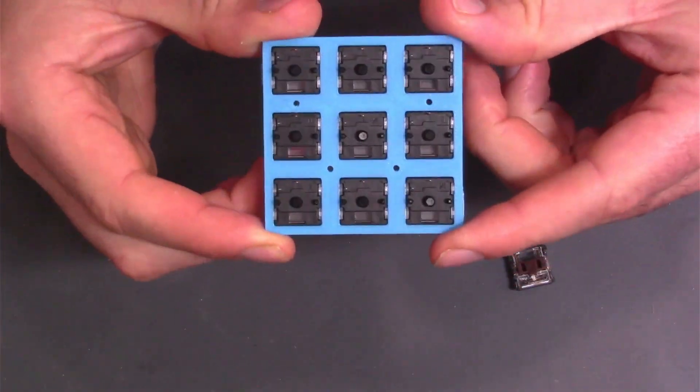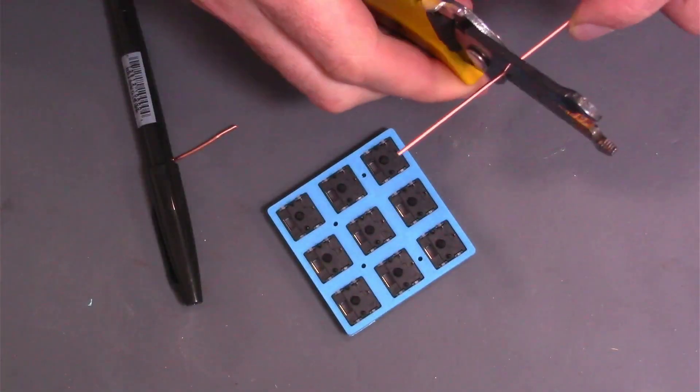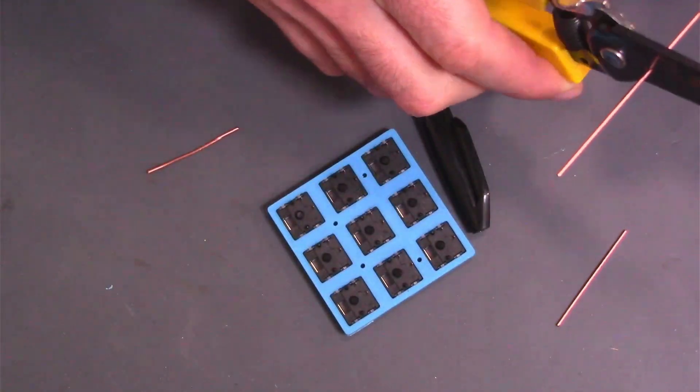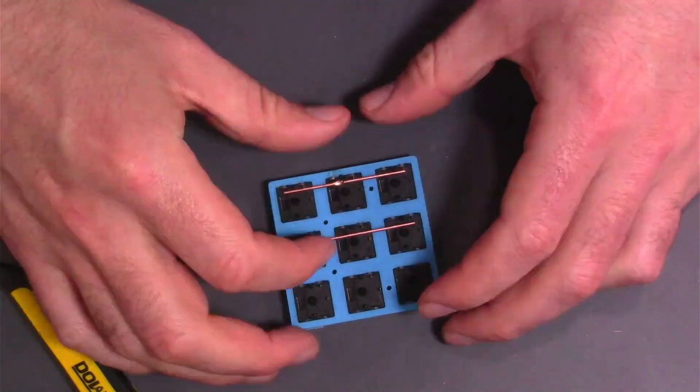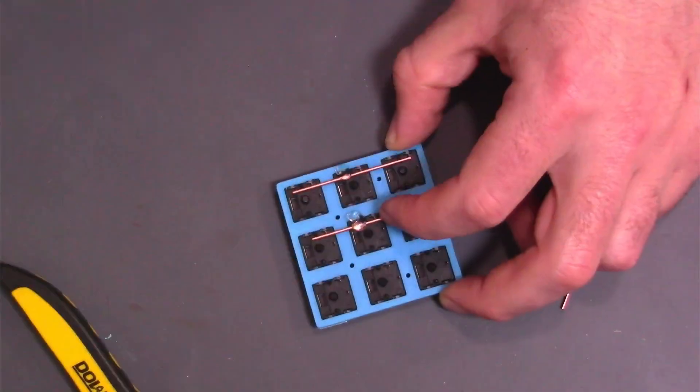Now that they're all in, it's time to start soldering. But first I cut three lengths of copper wire to connect the rows of my keyboard. I'm going to hot glue them in place so they stay put when I solder.